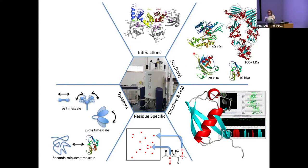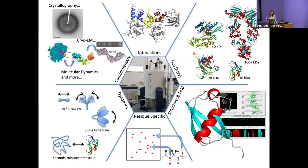Your proteins aren't static — they are moving in solution and their motions are really important for their function. NMR can look at a broad range of timescales of motion: folding events on the seconds-to-minutes timescale, domain-domain motion on the micro-to-millisecond timescale, and even sidechain motion on the picosecond timescale. NMR is a very complementary technique — we sit at the interface between formal structure determination like crystallography and cryo-EM, and biophysical techniques. We're a really integrated structural biology technique.